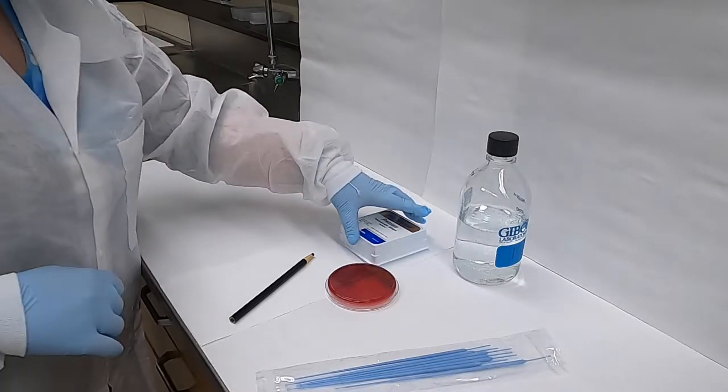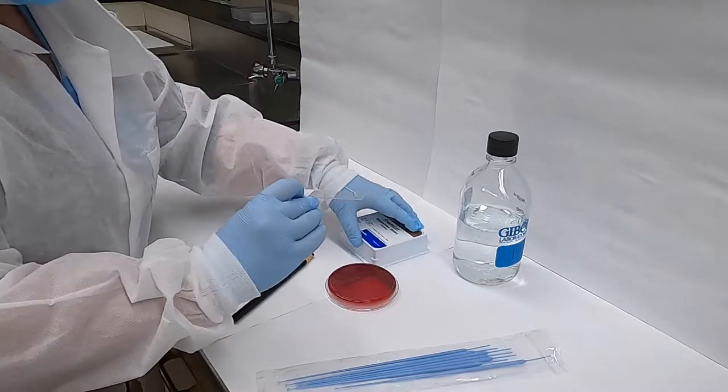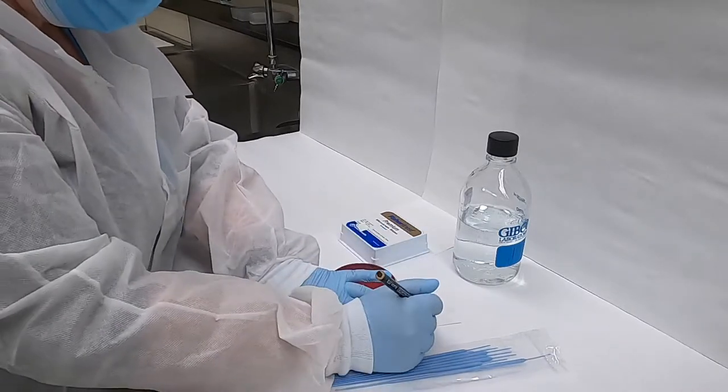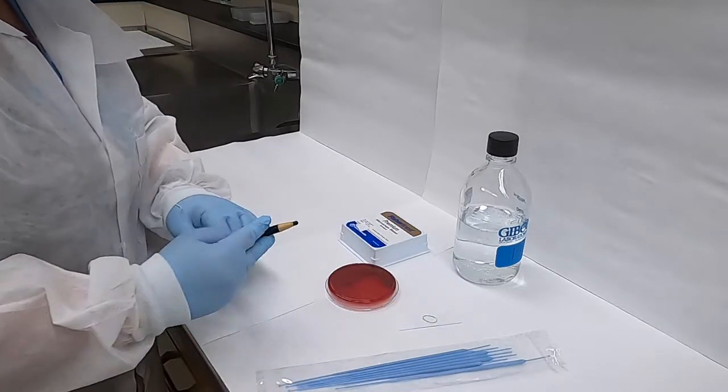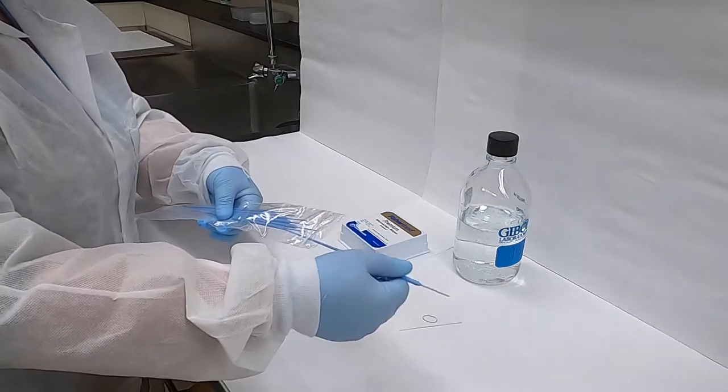The first step of the procedure is to prepare our glass slide. Remember to place your slide frosted side up. We're next going to draw a circle on the slide using a grease pencil which will help us to contain the materials that we're staining and also to orient yourself when visualizing under a microscope.